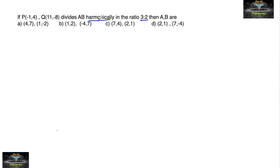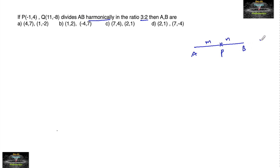First, what is the meaning of dividing harmonically? If points P and Q divide AB harmonically, we call A, P, Q harmonic conjugates of AB. This means P divides the line segment AB internally in the ratio m:n, and Q divides AB externally in the same ratio m:n. Then A, P, Q are harmonic conjugates to A and B, and vice versa.